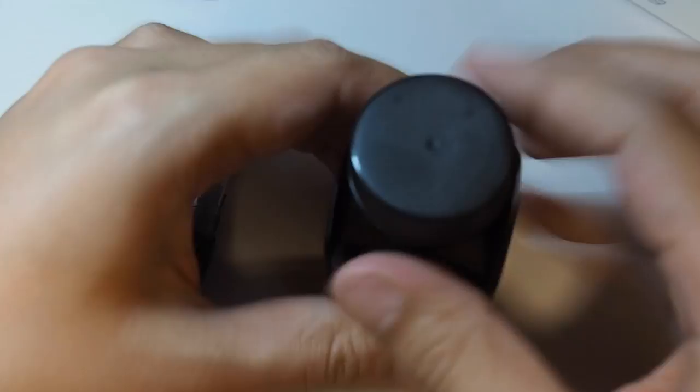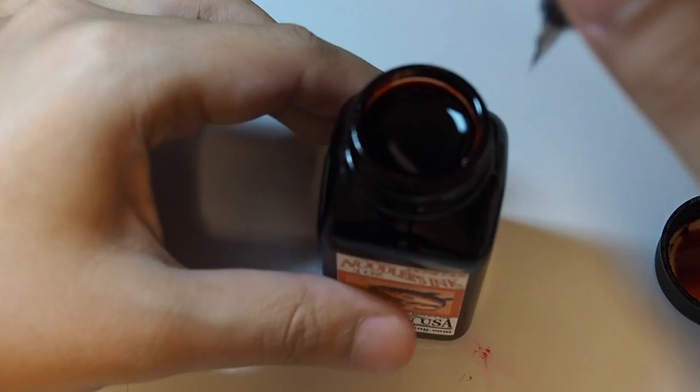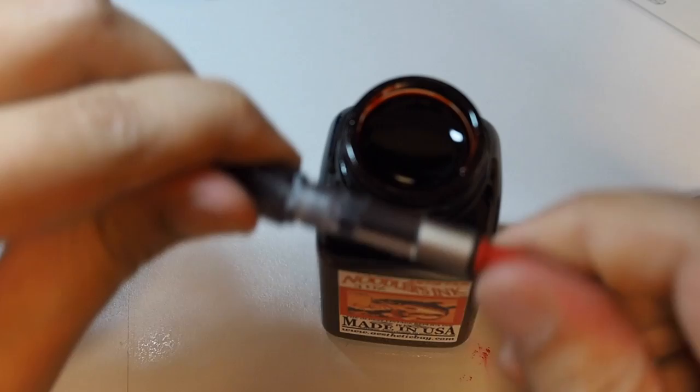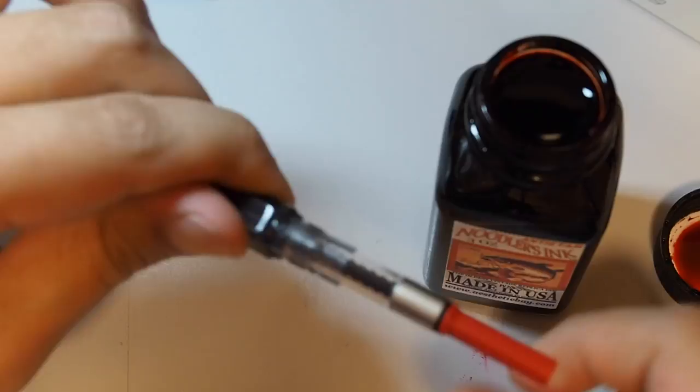So I just need to open the cap and we dip. First, we need to make sure that the pump is in the down position. We want to go down, so that when we pull it up, it will create some kind of suction that will draw the ink into the reservoir.